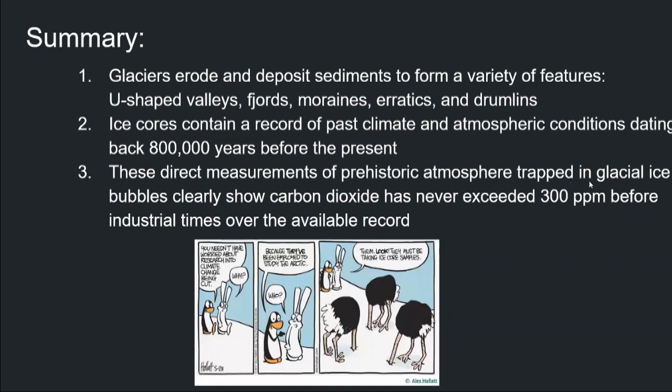Let's finish this lecture with a summary. Glaciers erode and deposit sediments to form different features: U-shaped valleys, fjords, moraines, erratics, and drumlins. Each of these features provides information about glaciers. Ice cores contain a record of past climate and atmospheric conditions dating back to 800,000 years before the present. We also saw where we would ideally drill an ice core to get data, how we can date the ice using volcanic ash layers, and how we use air trapped in the bubbles of ice to reconstruct the past atmosphere. All those measurements give us direct, precious information about the historic atmosphere.